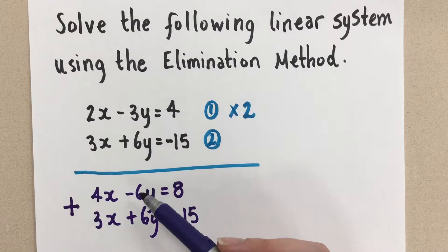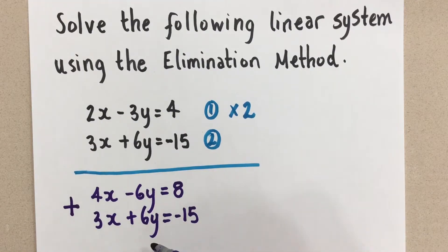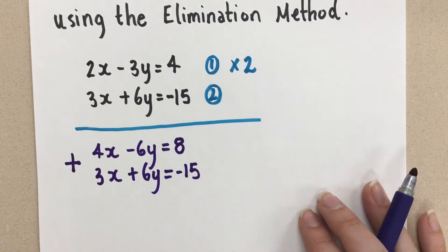I would get 6 minus 6 gives me 0. So you're the one that determines whether to add or subtract the equations together to eliminate a variable.